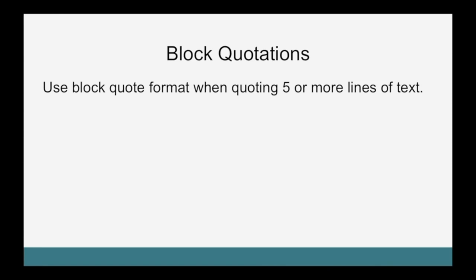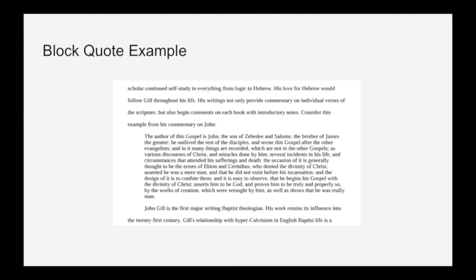Use block quote format when quoting five or more lines of text. The block quote format indents the entire quote a half inch, with a regular margin on the right-hand side — sometimes called a ragged or jagged margin on the right. It starts on a new line, and the paragraph continues on the next line after the block quote. The block quote is single-spaced, unlike the rest of the text, and it appears without quotation marks because this unique formatting tells the reader clearly enough that this is a quote. Block quotes also need footnotes, and in this particular example, the only thing missing from this block quote is a footnote after the period ending the quote.